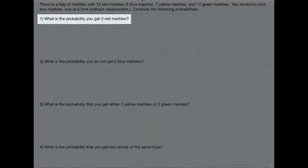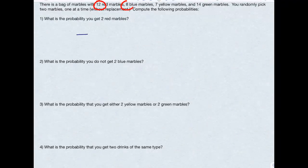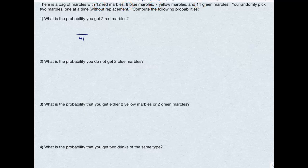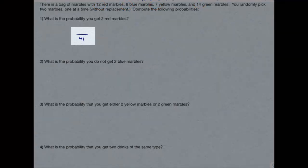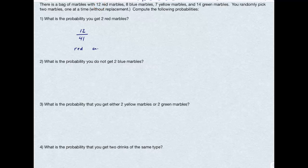The first question asks for the probability you get two red marbles. Well, the first marble I'm picking, if I add up 12 plus 8 plus 7 plus 14, I get that there are 41 marbles all together. So that's going to be my denominator when I pick the first red marble. So there are 12 red marbles when all of them are in the bag. So I want to get one red marble and another red marble. When I use 'and', that's multiplication.